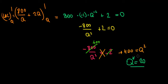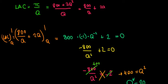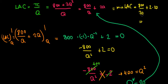Q equals 20 is the quantity that minimizes the long-run average cost curve. Substituting into the LRAC curve: the minimum point of LRAC equals 800 divided by 20 plus 2 times 20, which is 40 plus 40 equals 80. So the price in the long run is equal to 80.